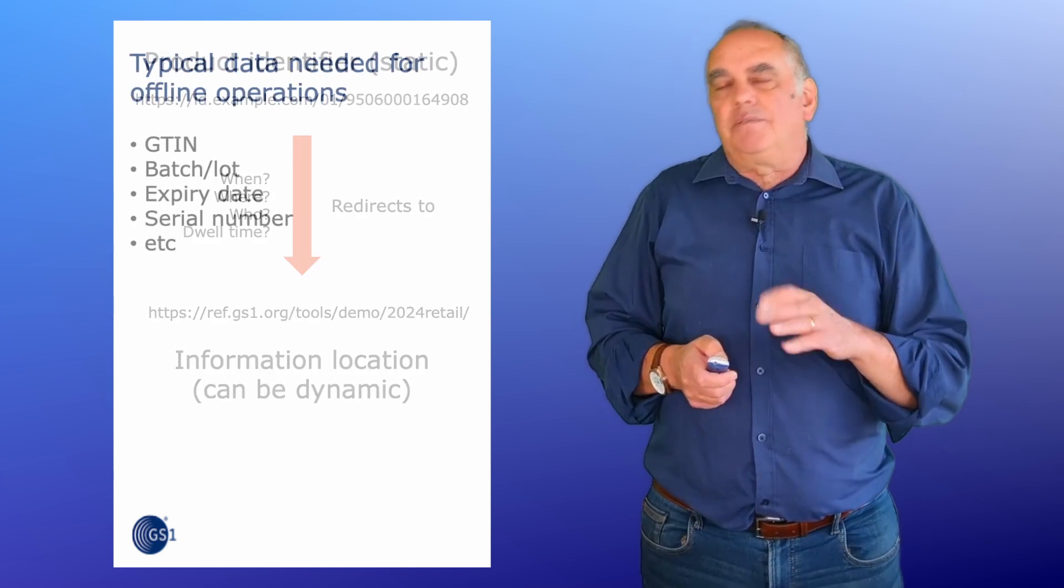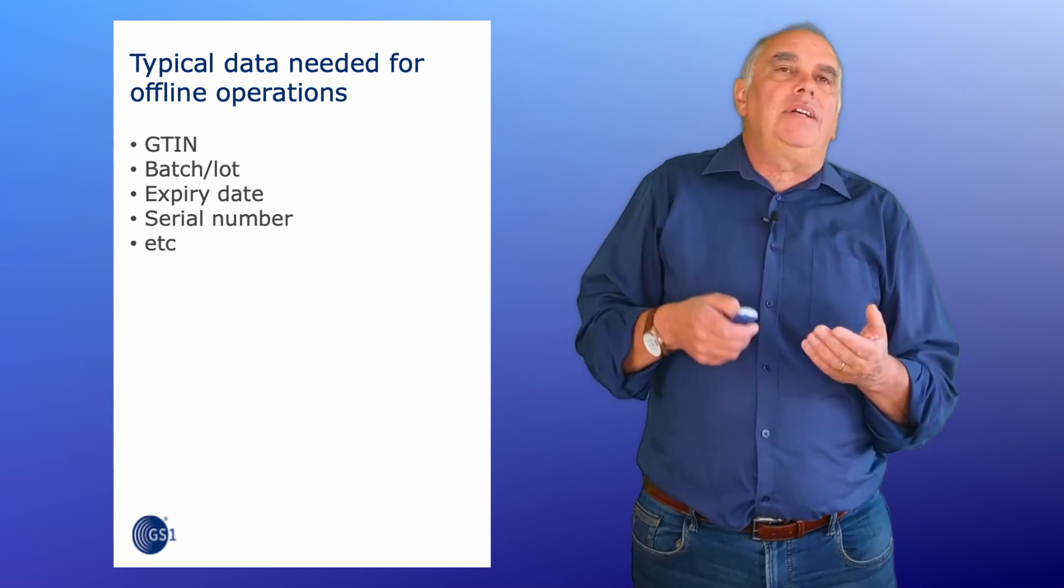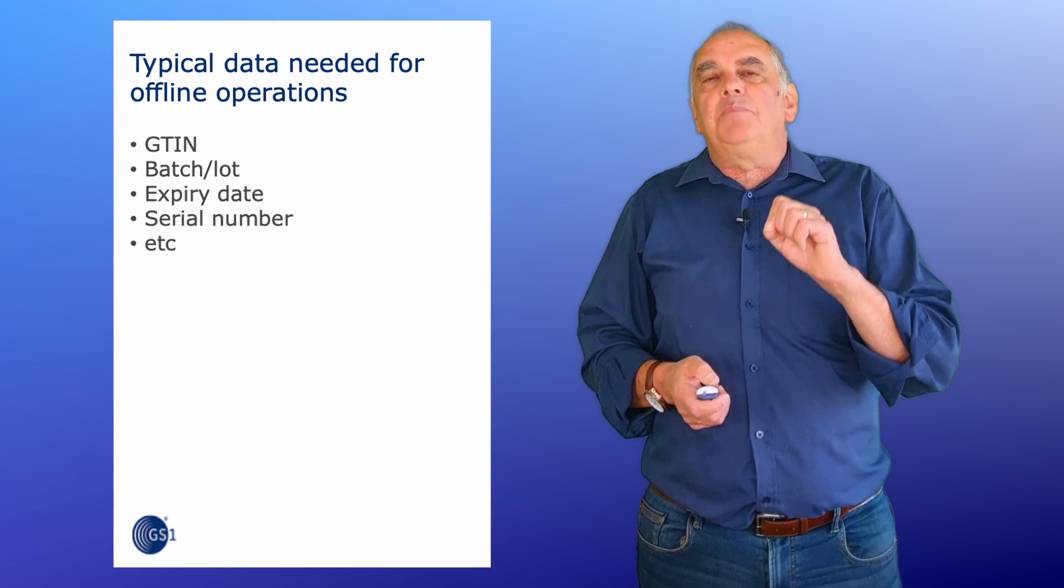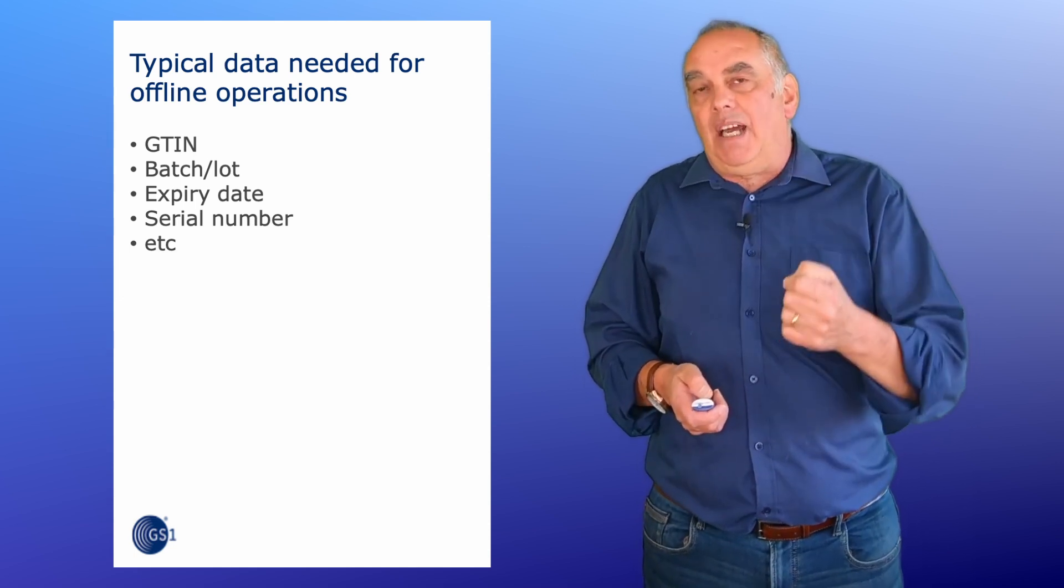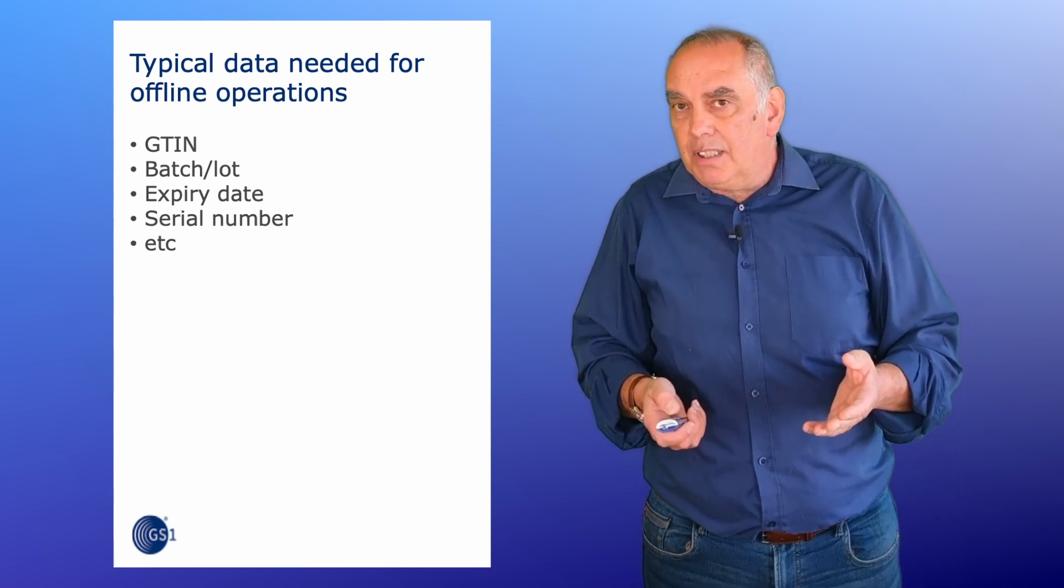In a retail environment, the barcode will have a GTIN, perhaps a batch number, an expiry date, a serial number, that sort of thing. Those are the bits of data that you need to be available for offline operations in the back of store and at checkout. And that's all you should ever put in the 2D barcode.